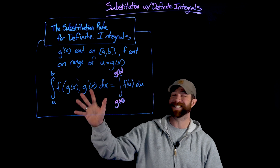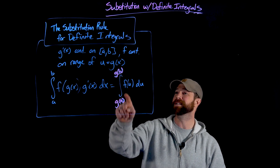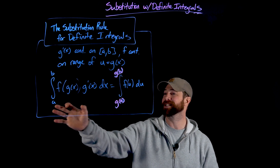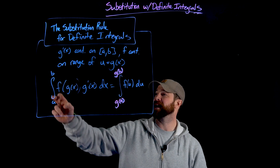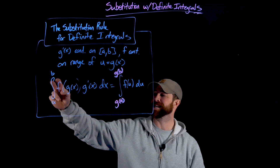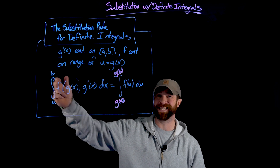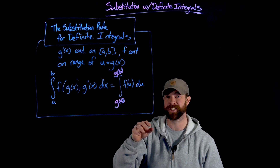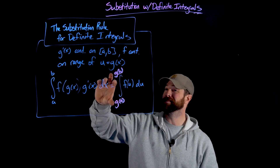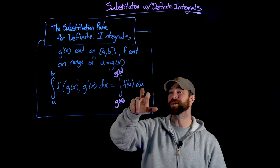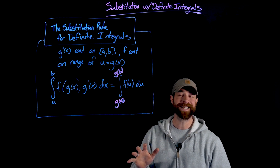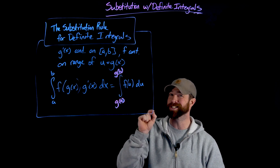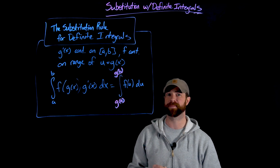This setup is exactly the same. The only difference is what's going on with the bounds — these are values in terms of x, from a to b. If you're going to change the variable with which you're differentiating, you need to write these bounds in terms of that variable. You'll see in the next two examples how to make this change, and it's really not that complicated — it's just something you've got to keep track of.